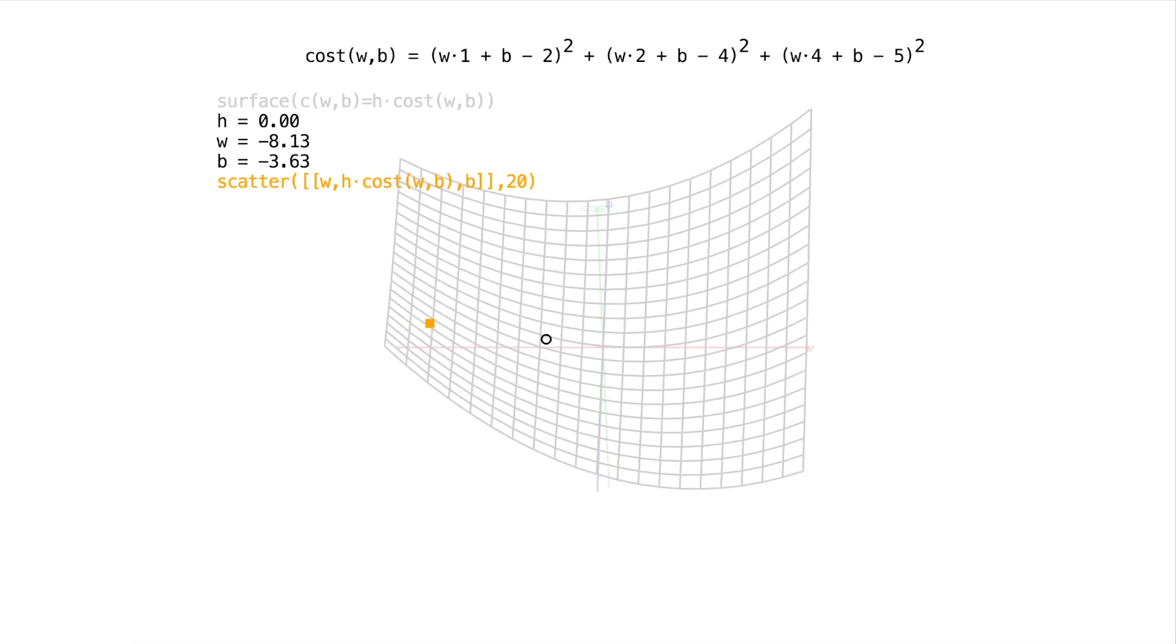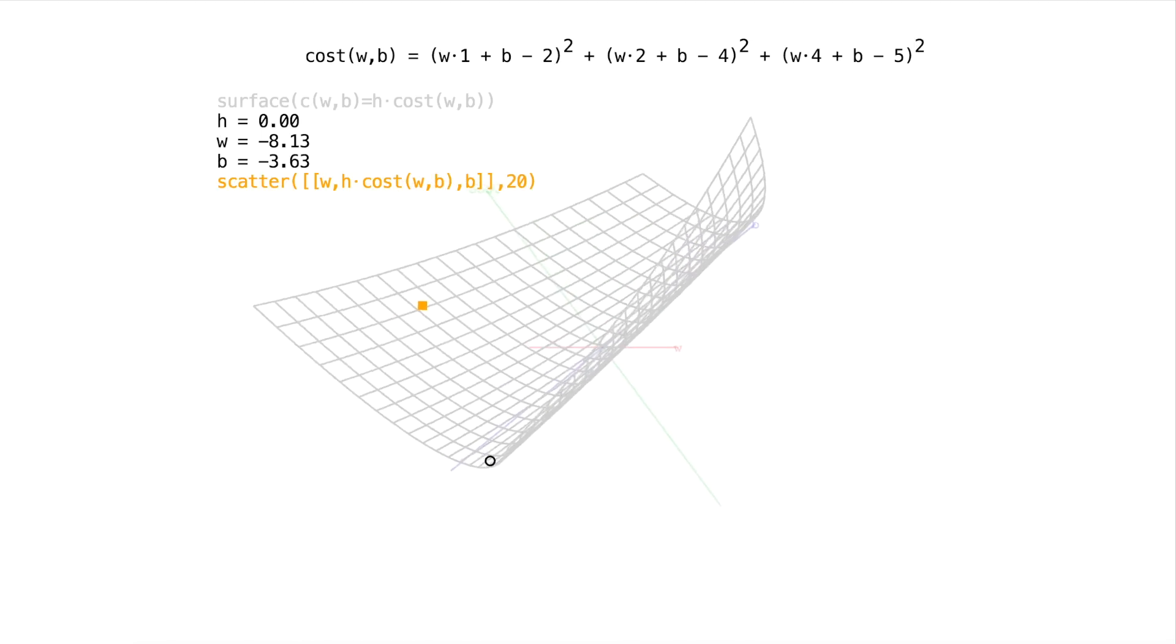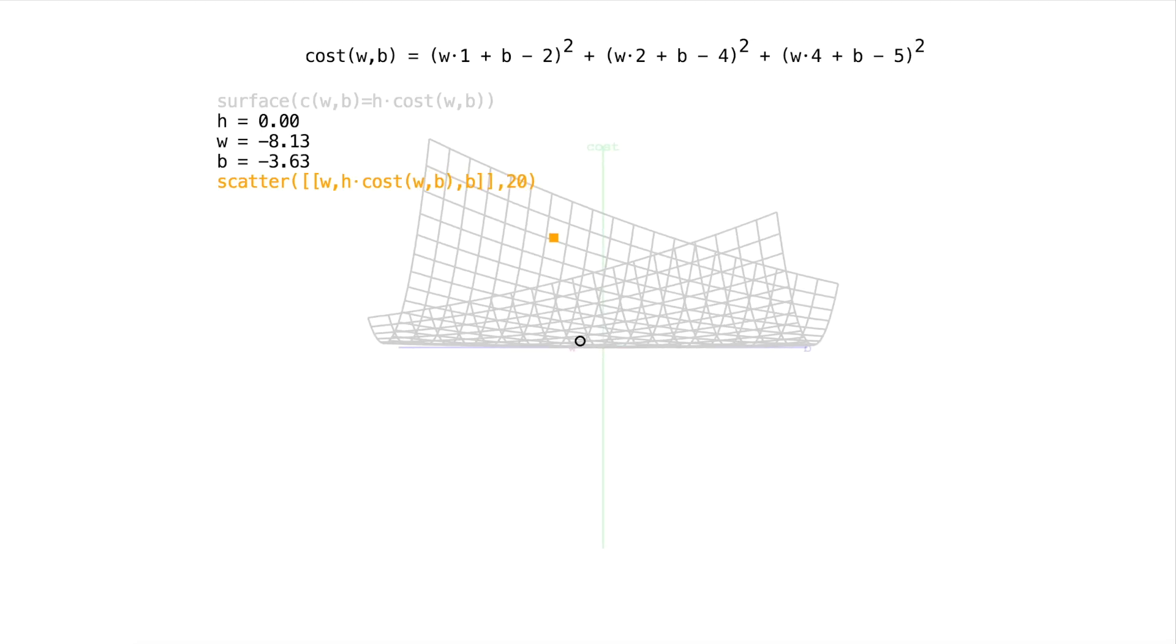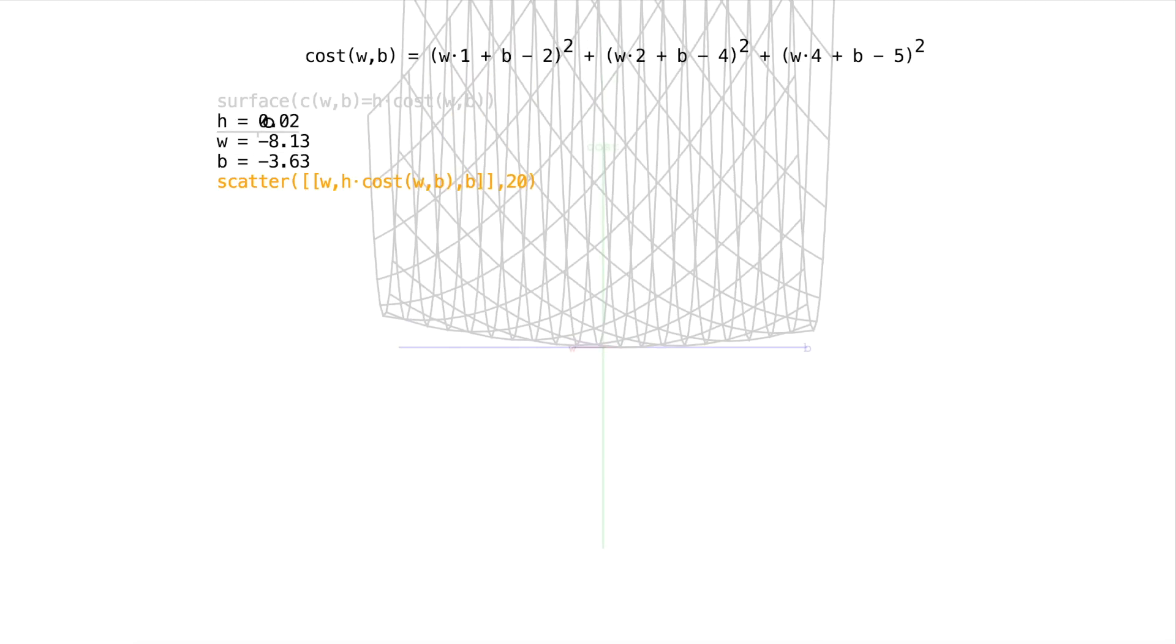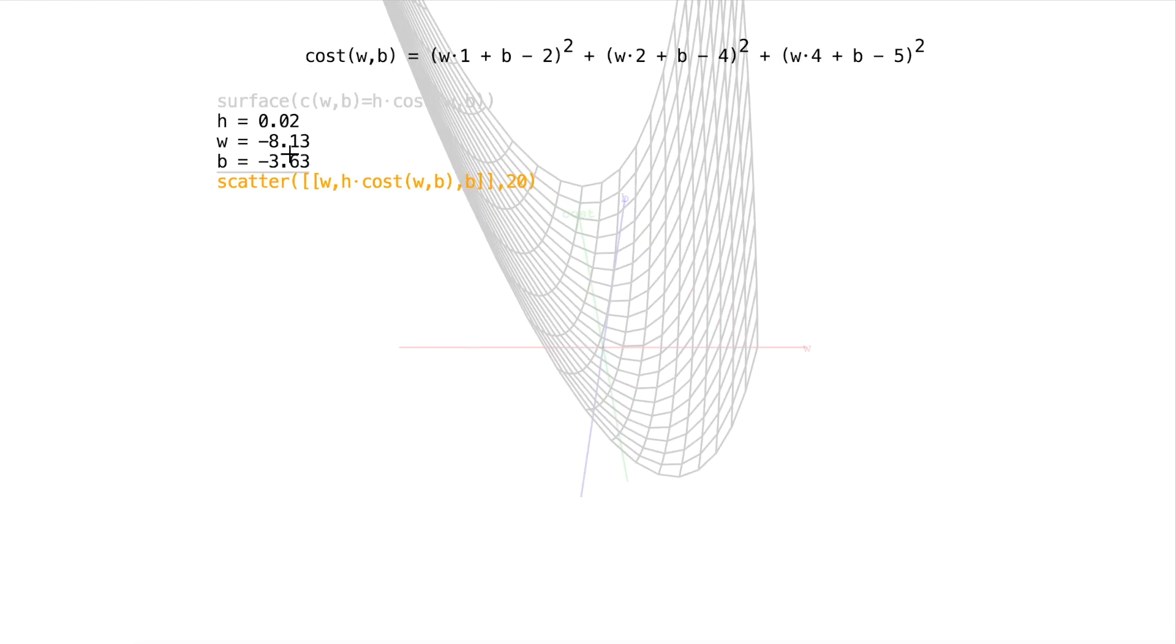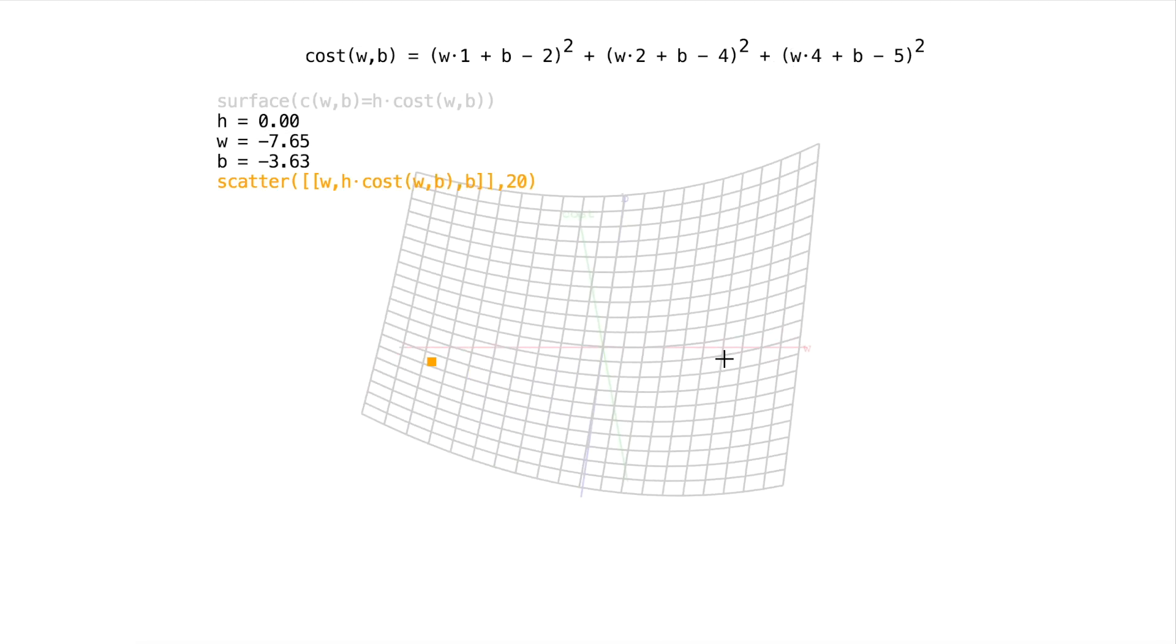So this is what we would typically do. We would pick a random w and b. And now we need to know how the cost is changing at that w and b. We really want to know the slope of the cost in the w dimension. So how much is it sloping here? Is it sloping down or is it sloping up? And we also want to know the slope of the cost in the b dimension.